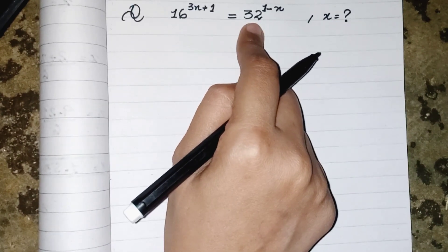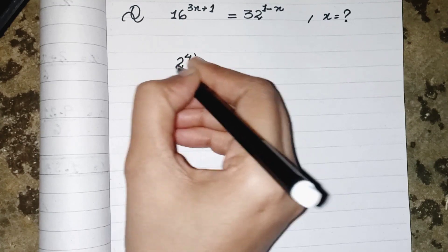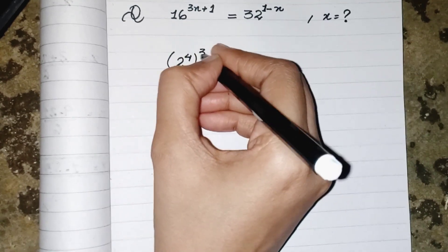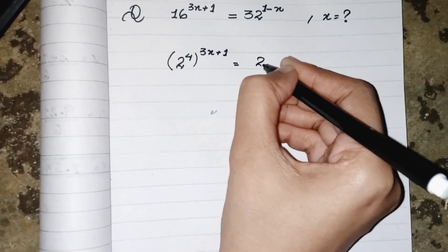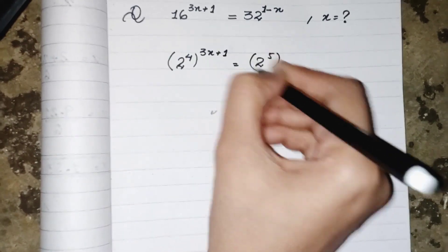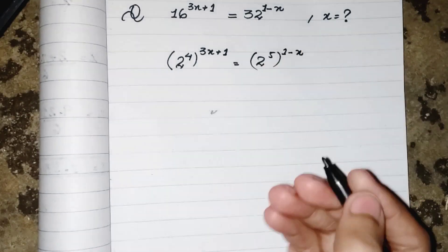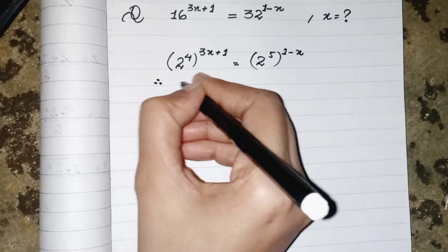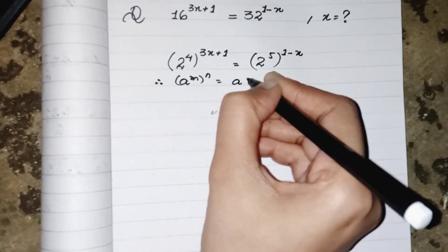So we can write as 2's power 4 whole power 3x plus 1 equals to 2's power 5 whole power 1 minus x, which means whenever we have powers over power, both powers will be multiplied to each other.